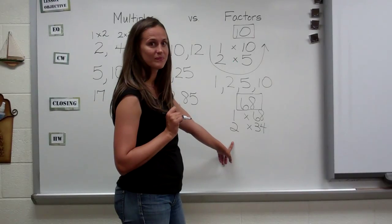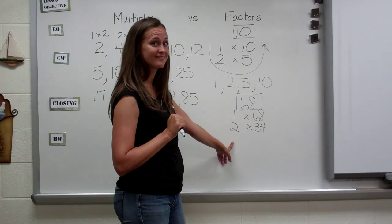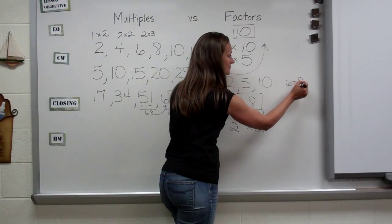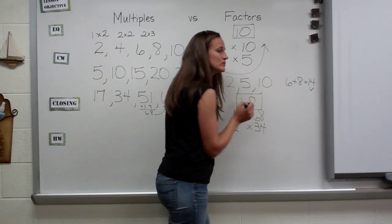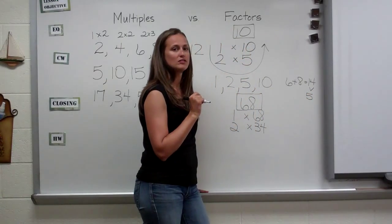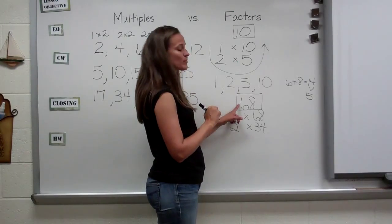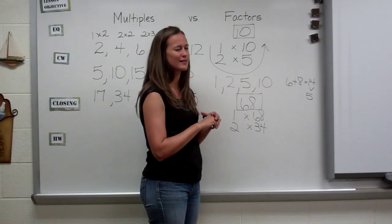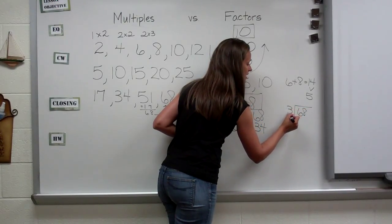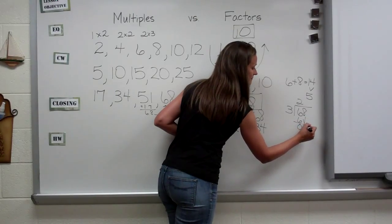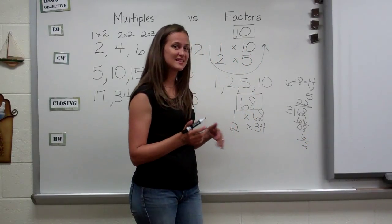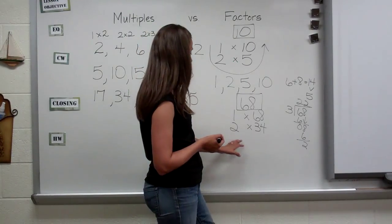What about three? Do you know the rule for three? You can add the digits: six plus eight is fourteen. Now add those two digits: one plus four is five. Can five be divided by three evenly? No. So 68 cannot be divided by three — it's a little trick to make things easier. If you want, you can sit and divide it to check: sixty-eight divided by three gives a remainder, so it doesn't divide evenly. So I'm going to skip three.